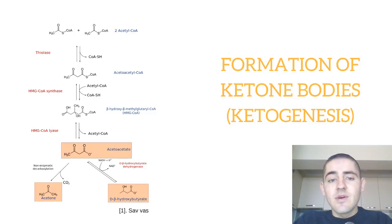So recall from a previous video that there are three ketone bodies: acetone, acetoacetate, and delta-beta-hydroxybutyrate or beta-hydroxybutyrate. Their production occurs in the liver.